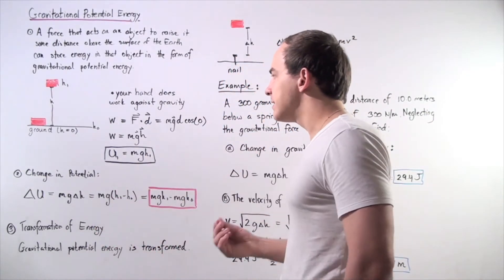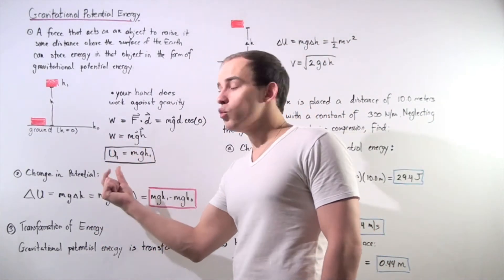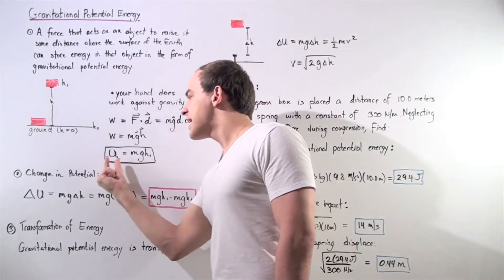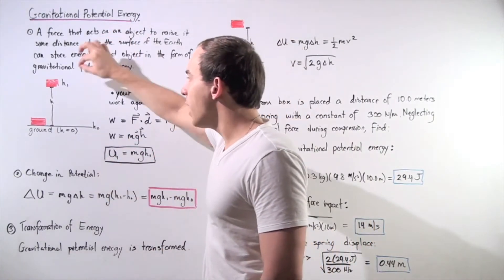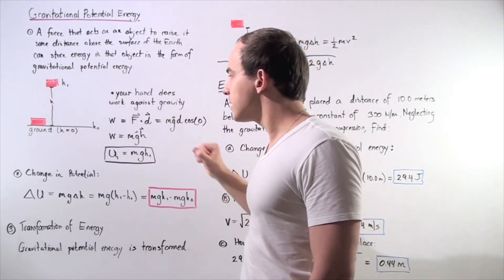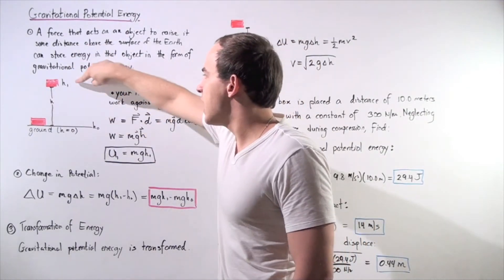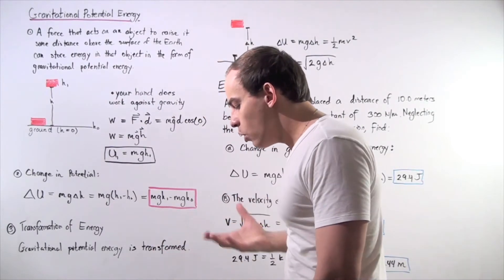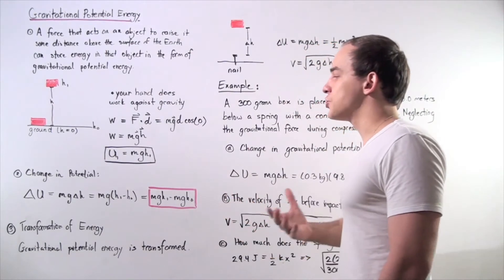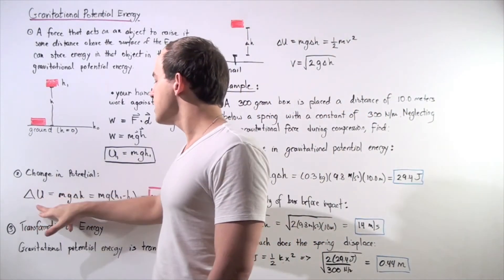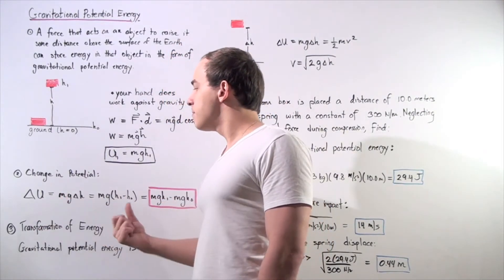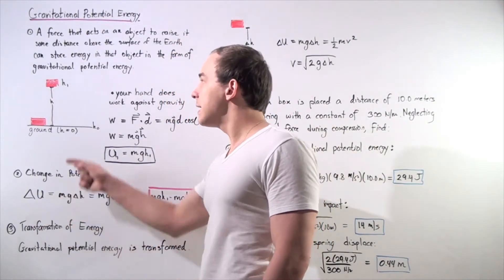The work done on the box due to the pull is equal to m times g times h. Another way of representing W is simply U. U represents gravitational potential energy — this is how much energy was transferred into and stored in the box when we moved it from the ground to height h1. Normally, we talk about the change in gravitational potential energy, denoted delta U, which is given by mass times g times change in height.